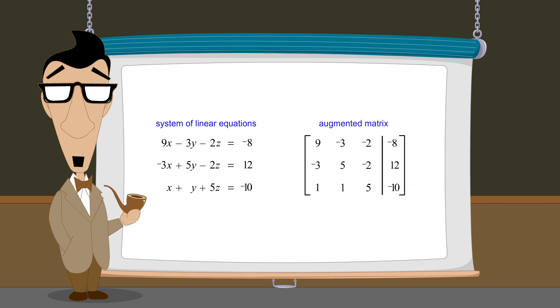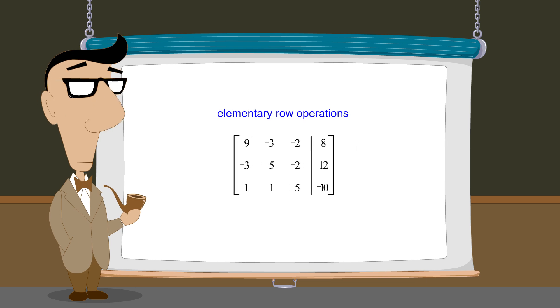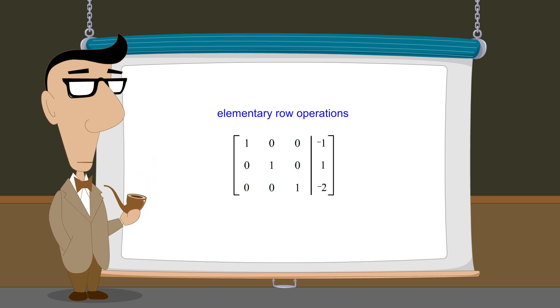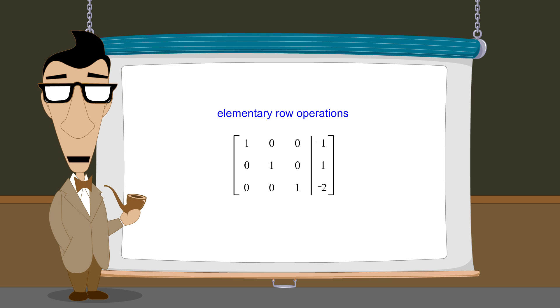In this lecture, we will introduce three matrix operations called elementary row operations which are used to transform an augmented matrix into a matrix representing a simpler system of equations with identical solutions to the original system. Two systems of equations which have different forms but identical solutions are said to be equivalent.